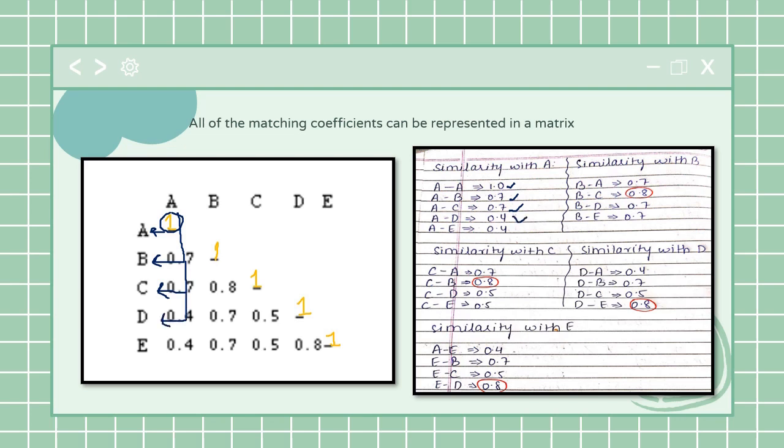And A is again 40 percent similar to E. I hope you're noticing my arrows and my checkpoints. This is how you know what this table is trying to say.